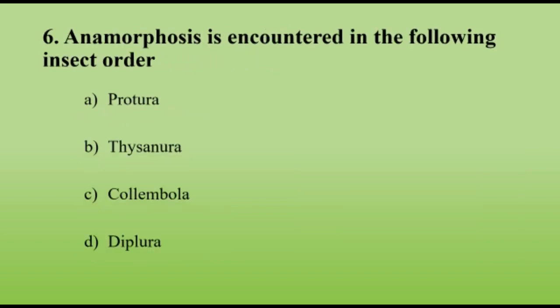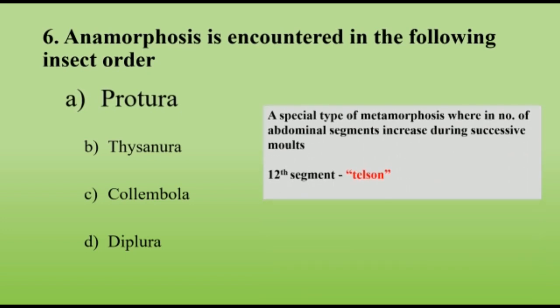Anamorphosis is encountered in which insect order? Proturans. Anamorphosis is a special type of metamorphosis wherein the number of abdominal segments increases during successive molts, giving rise to a 12-segmented abdomen. The 12th segment is called the telson, and hence Proturans are also called telson tails.